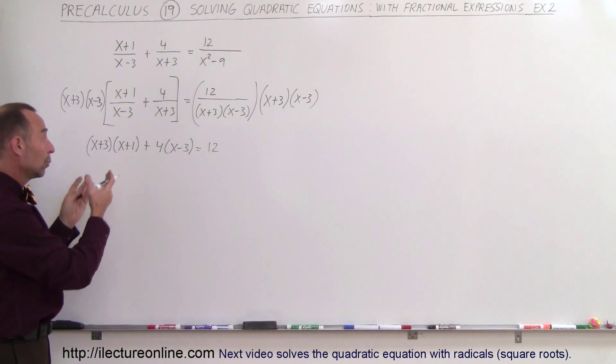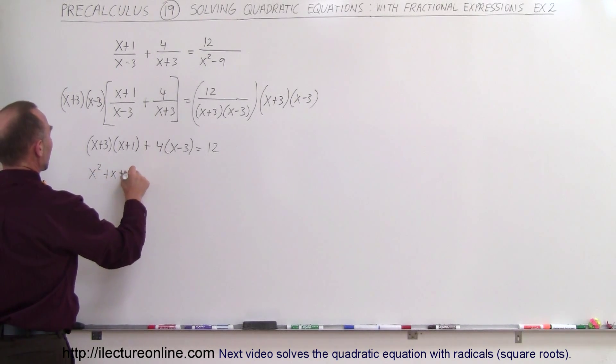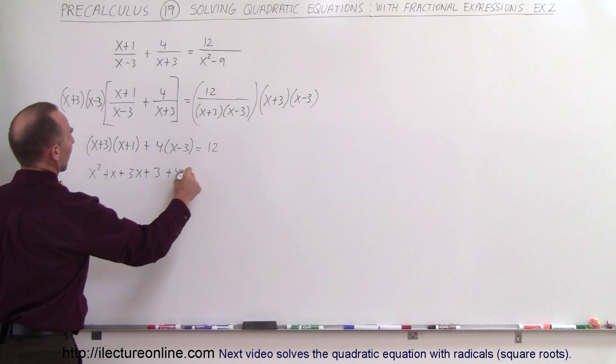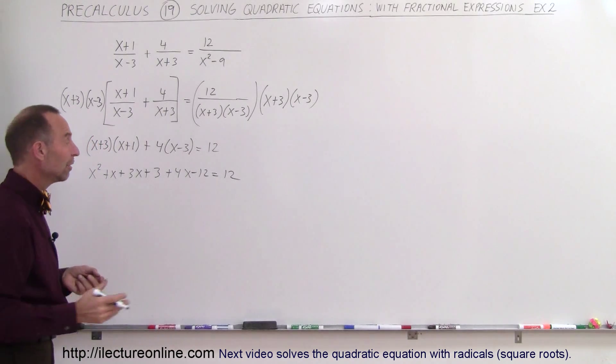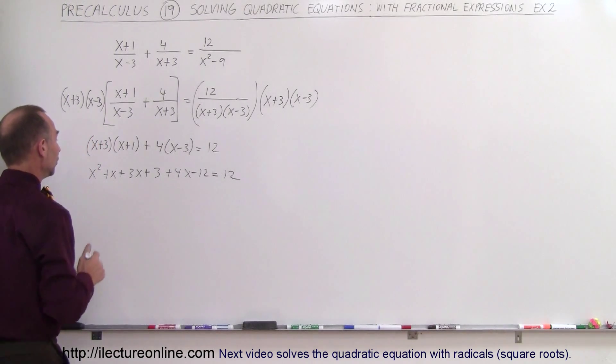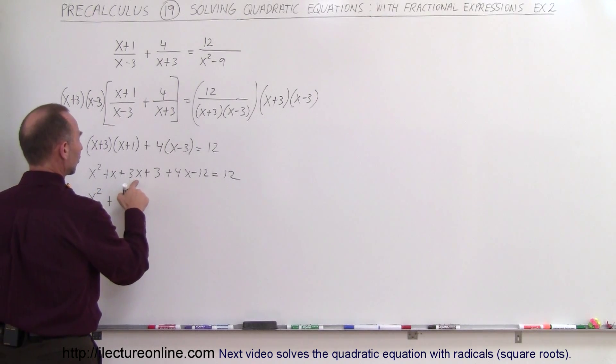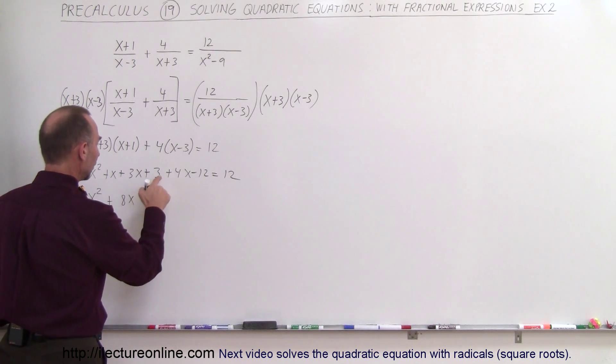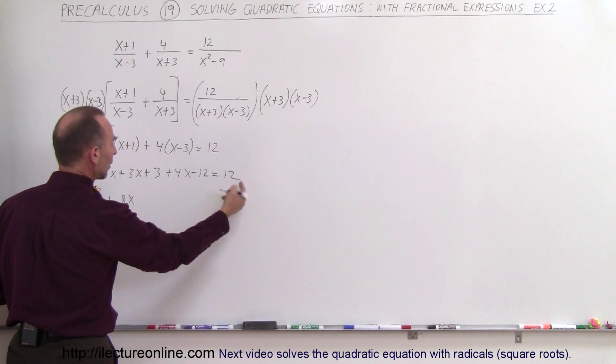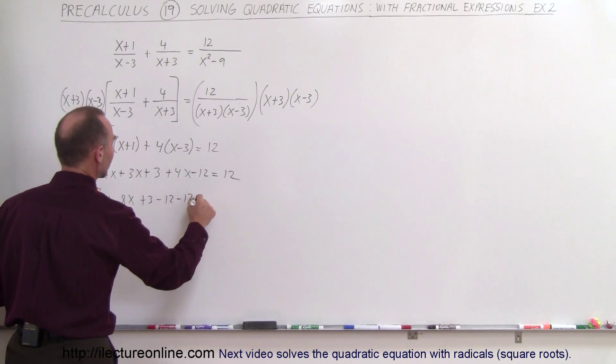Now we have a quadratic equation, because when we multiply this out, we get the following. We get x squared plus x plus 3x plus 3 plus 4x minus 12 equals 12. Then when we move everything over to one side, combine like terms, what do we get? We have x squared plus x plus 3x is 4x plus 4x is 8x.